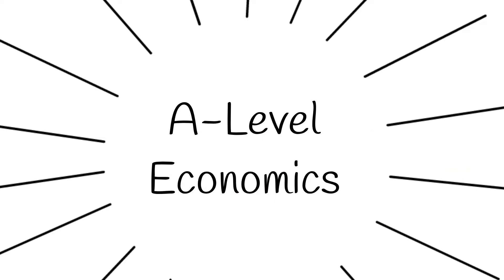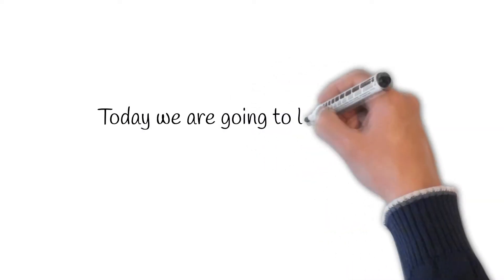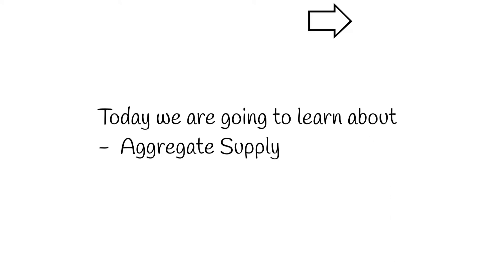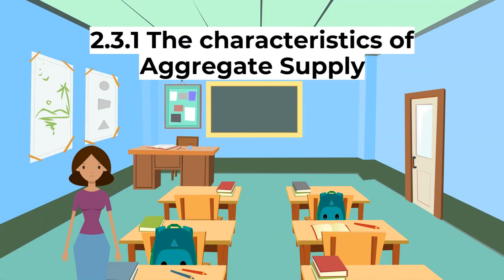Welcome to this video in our series on A-level economics. Topics covered today are as follows: 2.3 Aggregate Supply. If you haven't seen our previous videos, click on the card above. Let's start with the characteristics of aggregate supply.